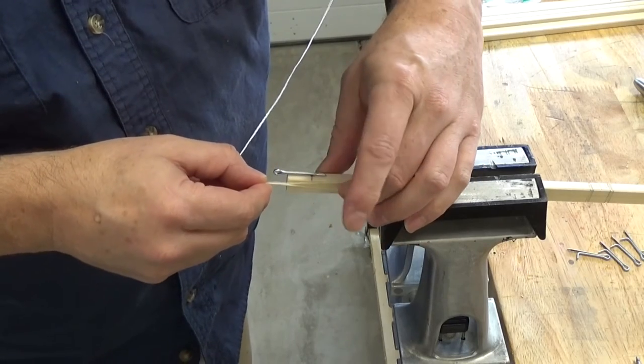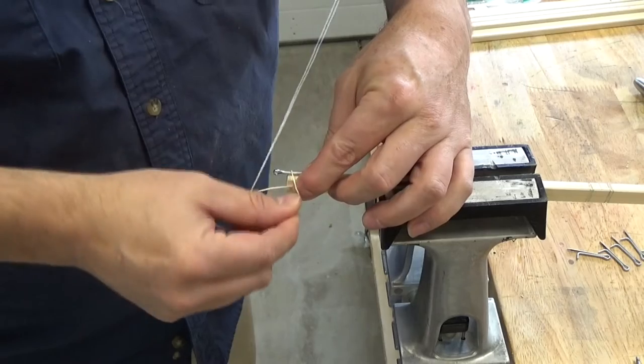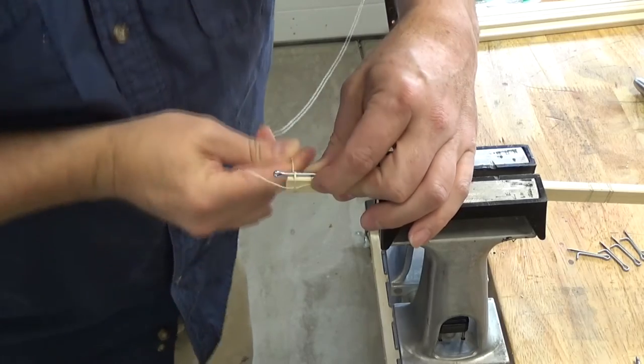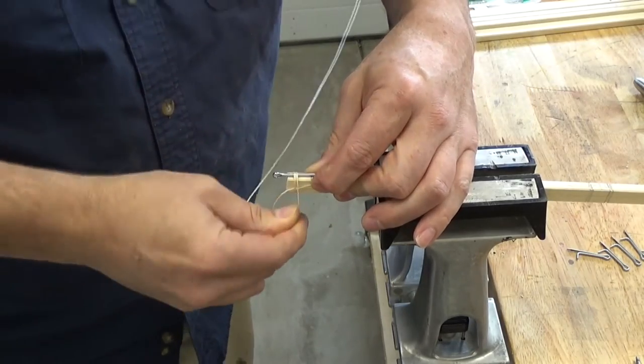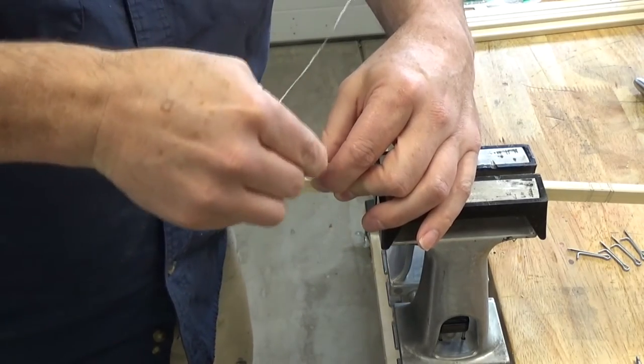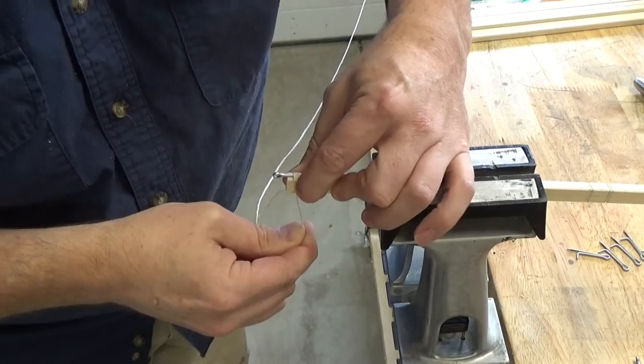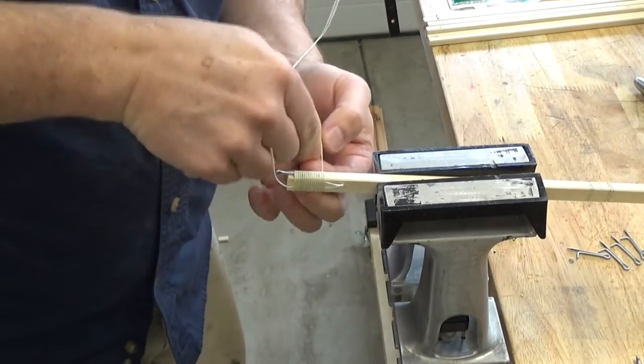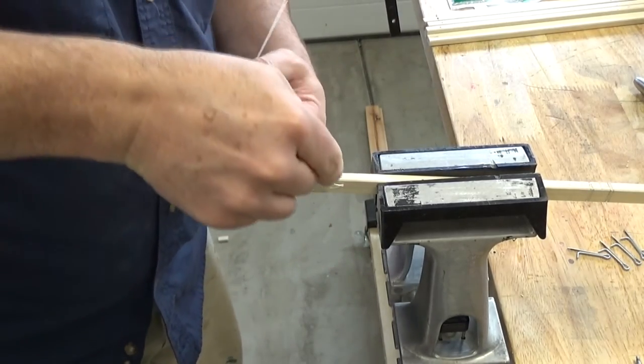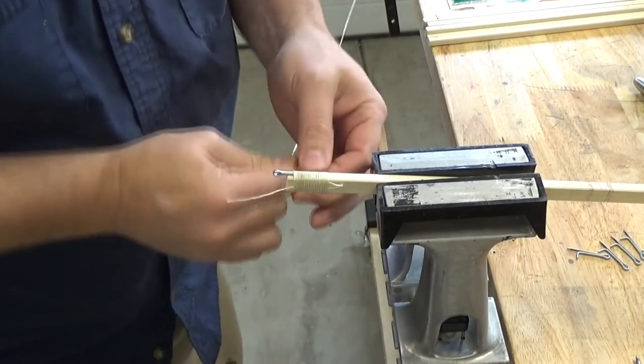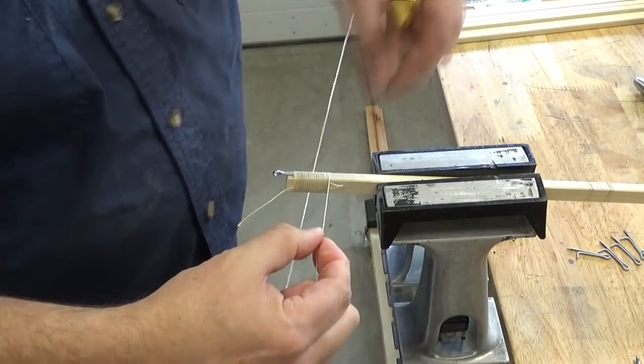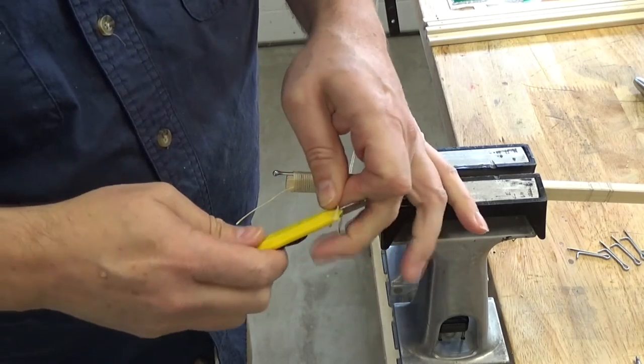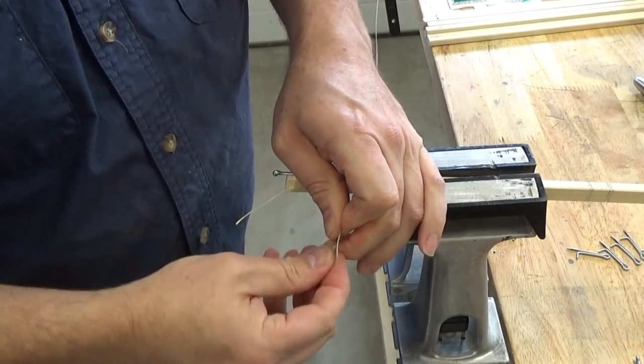I'm using waxed lacing cord to lash a cotter pin to the end of each spar. The cord I purchased is made of a synthetic material, polyester, so it may not be historically accurate, but it does seem to work quite well. In fact, I'm really amazed at how the wax adds to the holding power of this twine.